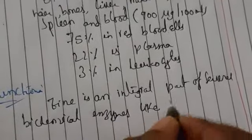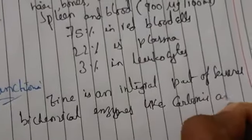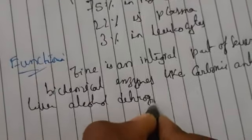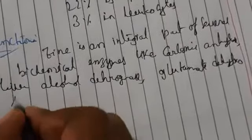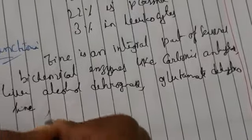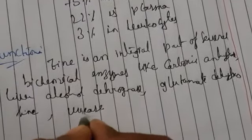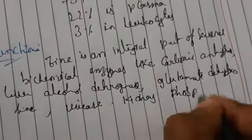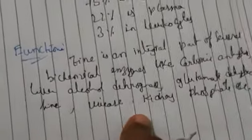The biochemical enzymes that contain zinc include carbonic anhydrase, liver alcohol dehydrogenase, glutamate dehydrogenase, uricase, and kidney phosphatase.